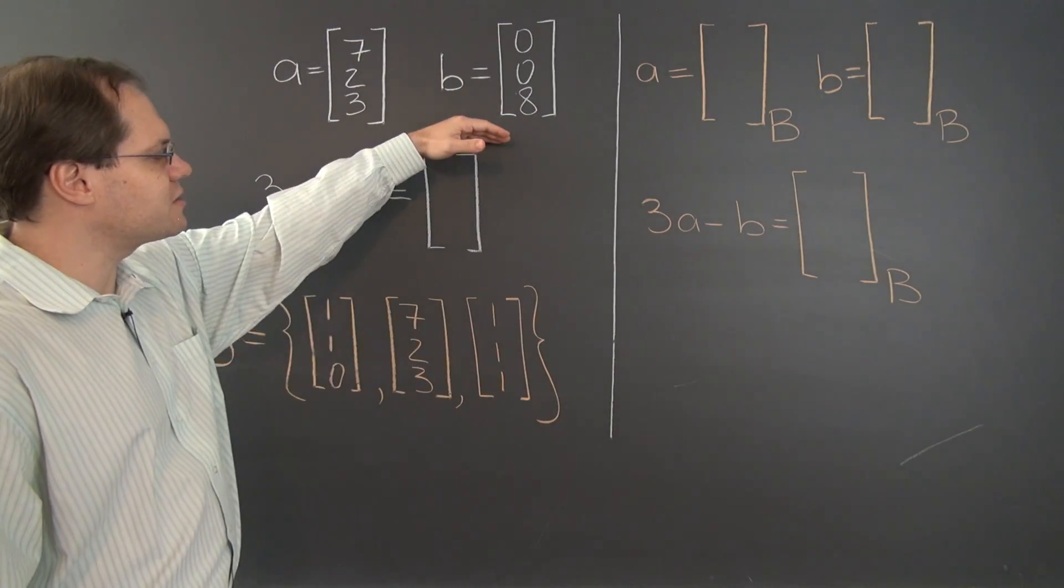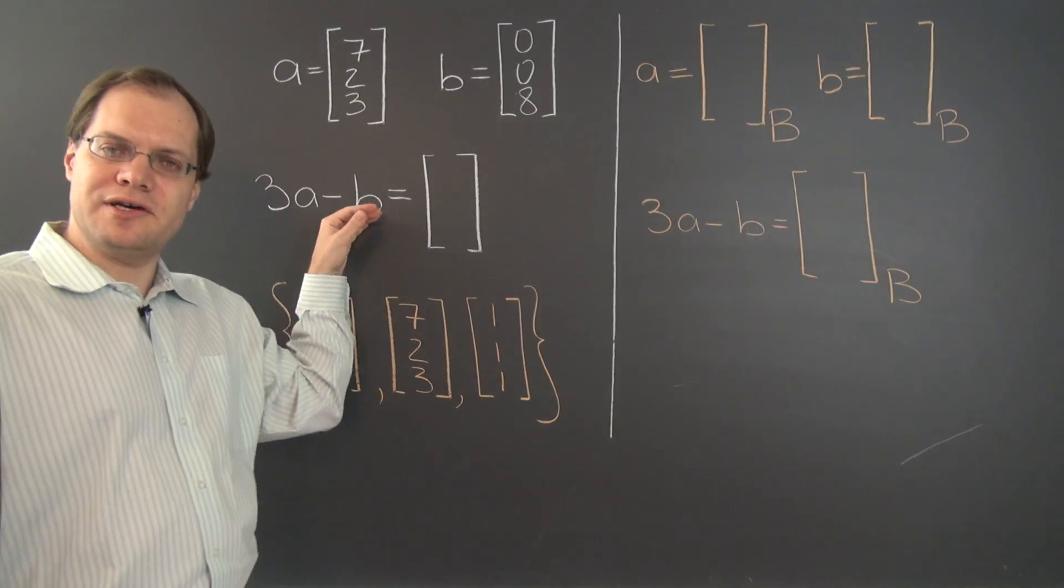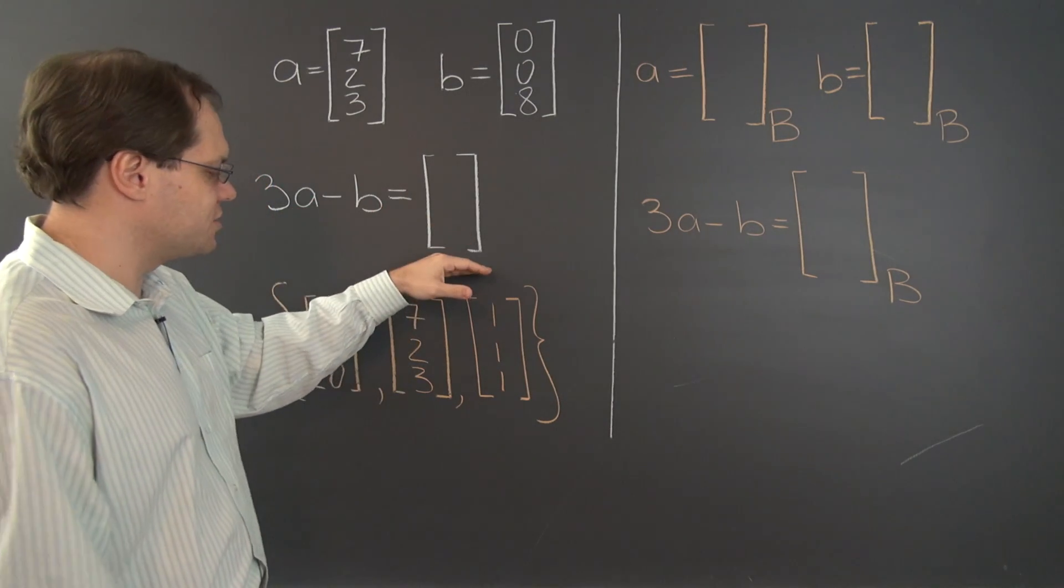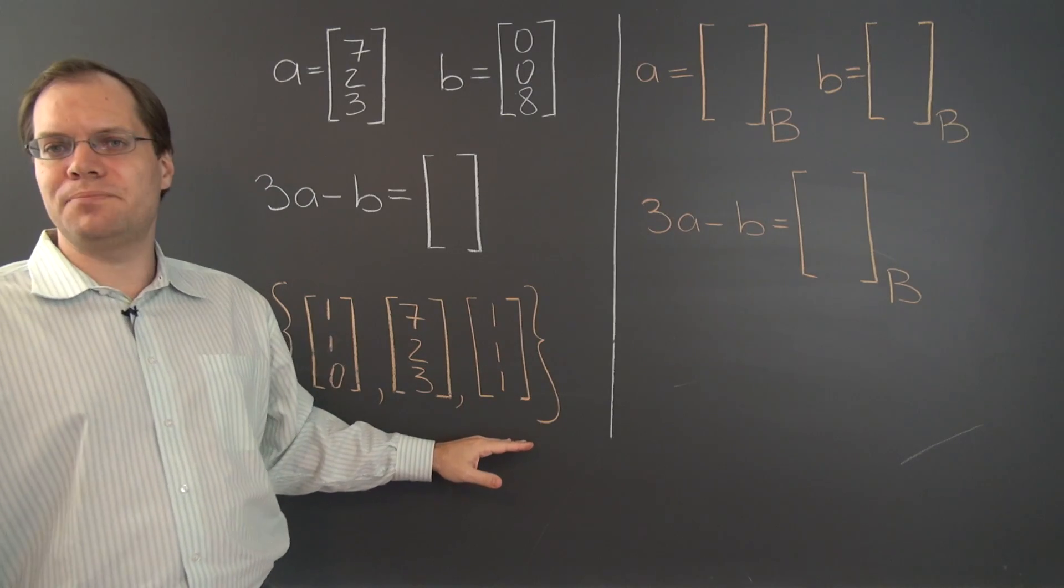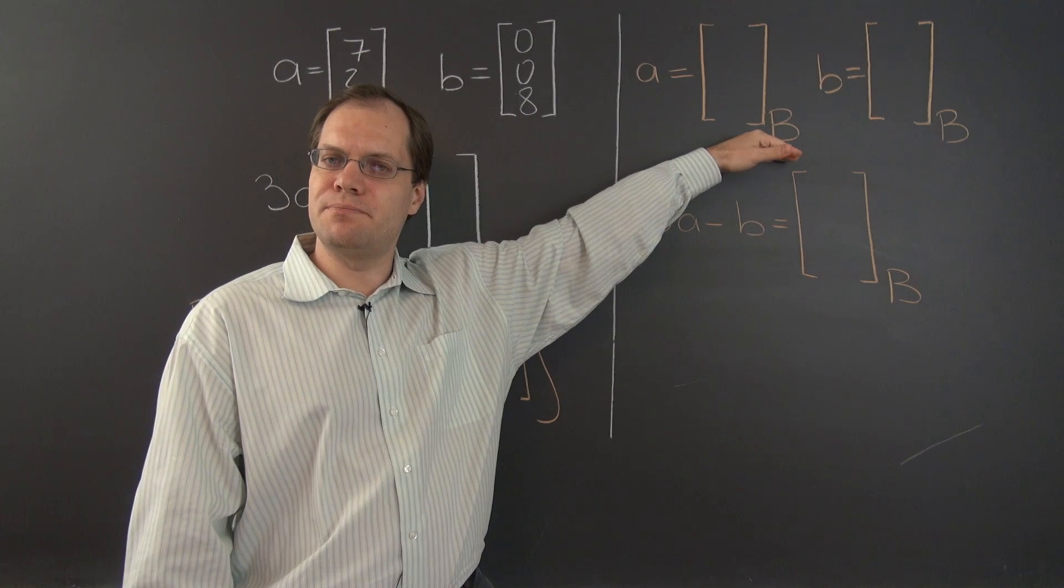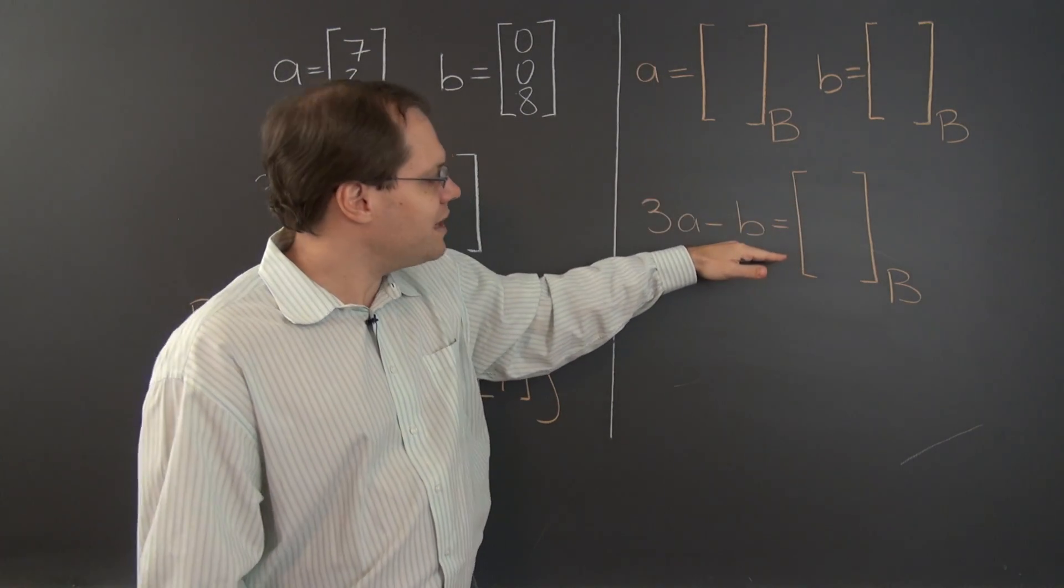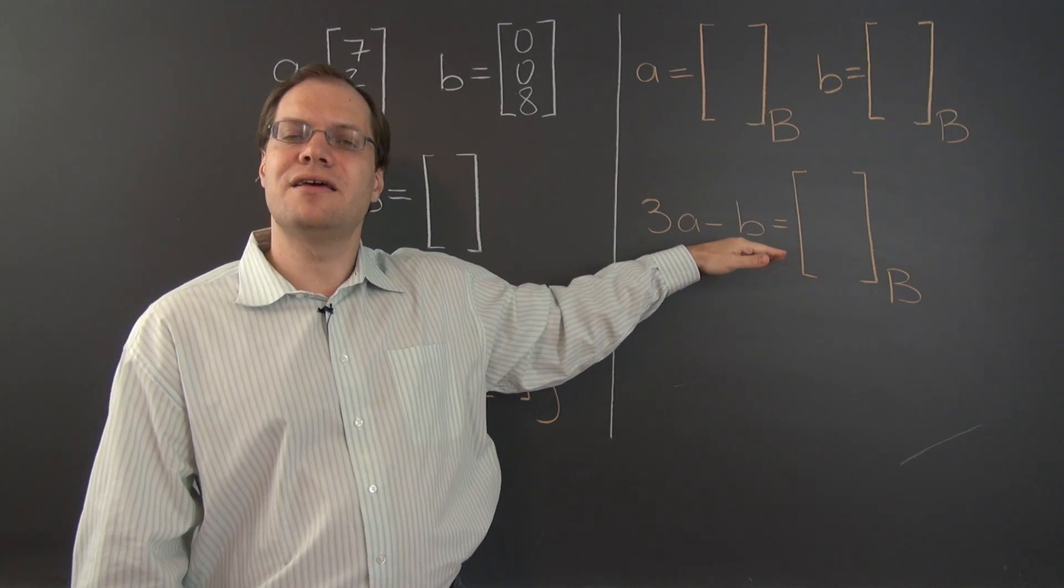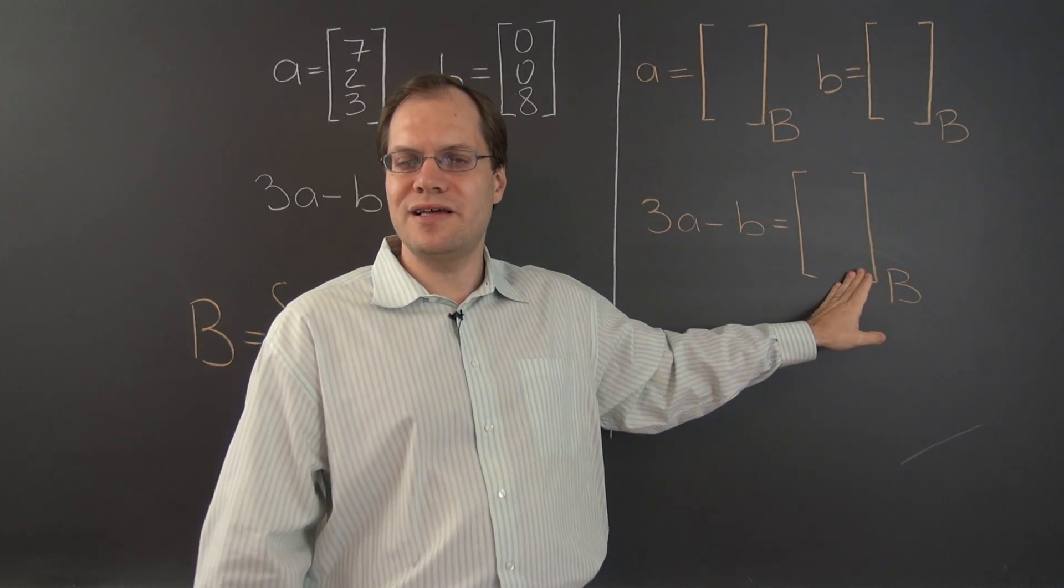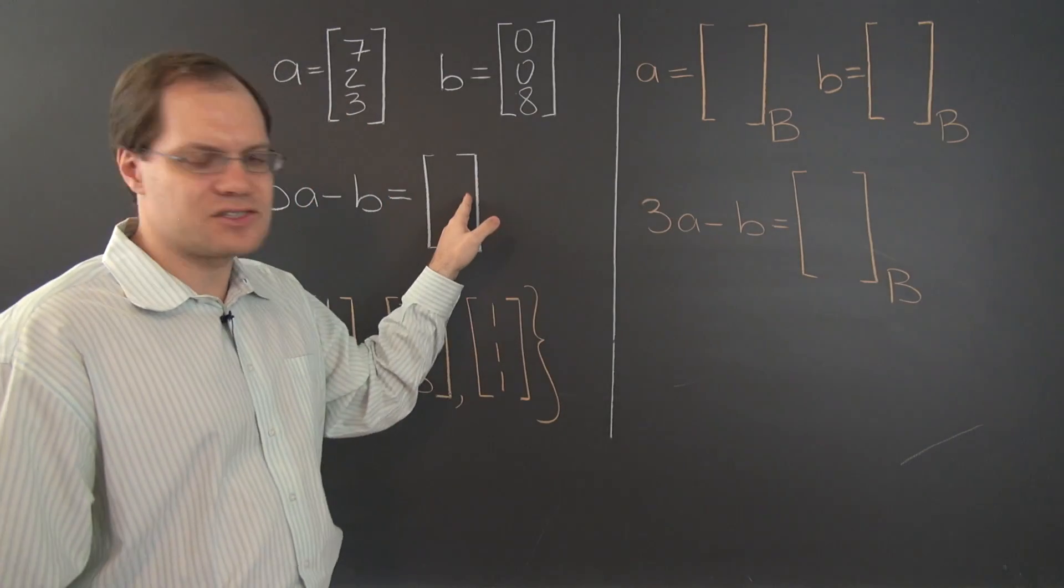So we're once again given two vectors and we're asked to evaluate a linear combination of those vectors. And once again we won't do that directly, but instead we'll pick a basis and translate all of the elements of the problem into the component space, evaluate the linear combination in component space, and then finally translate the components of the answer to the answer itself.